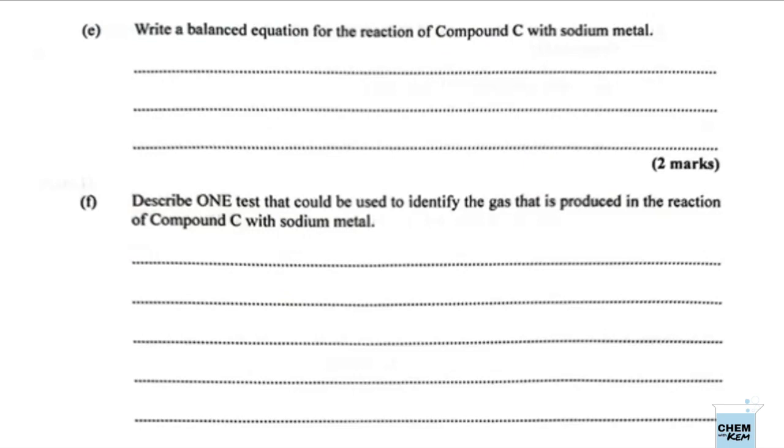In E, write a balanced equation for the reaction of compound C with sodium metal. Compound C is ethanol, so we're going to go again. That's C2H5OH, and this is a liquid which is going to react with sodium, which is a solid.